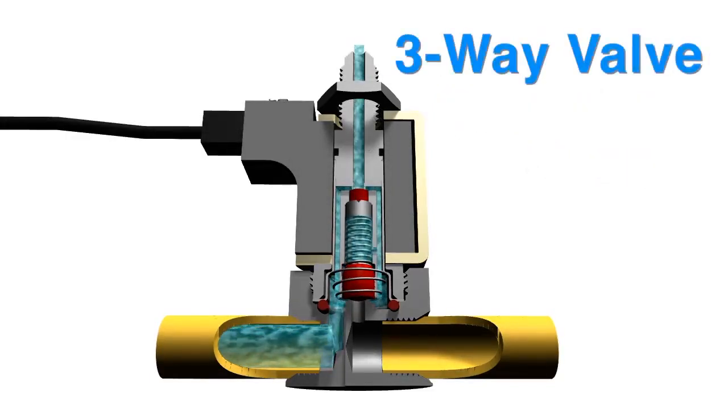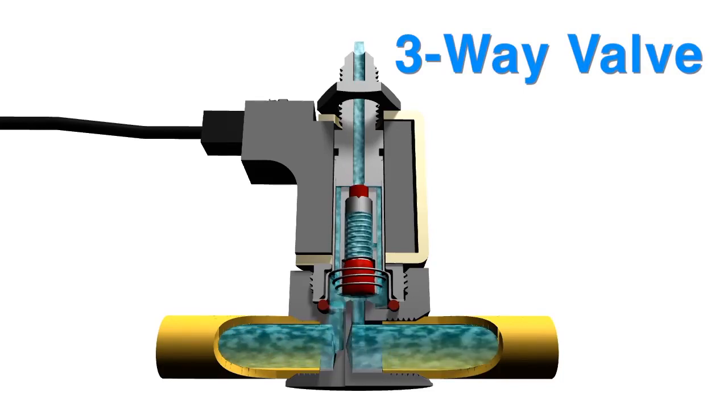A three-way solenoid valve has three pipe connections and two orifices, one of which is always open, allowing for two paths of flow.